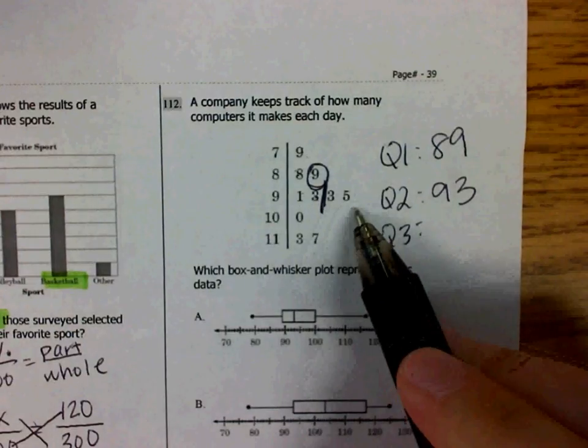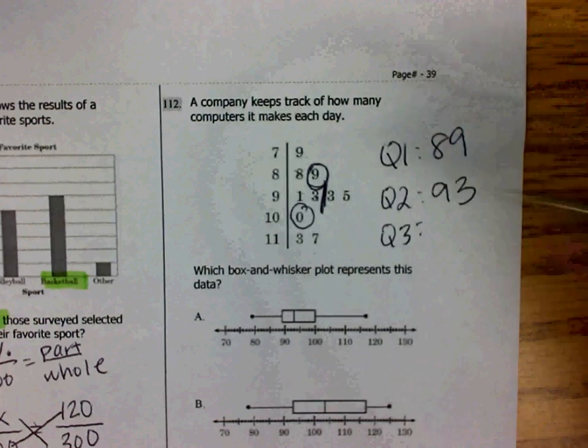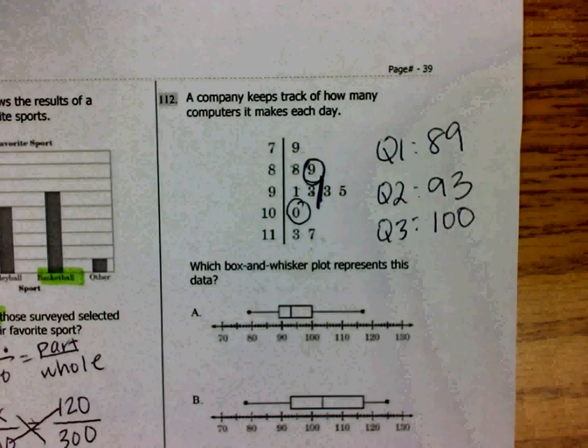And then the same thing holds true for the upper half of the data. So I'm going to count two, circle the next one. There's two data values after it, which makes 100 quartile 3.